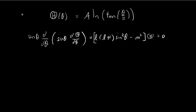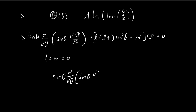In this question, we want to verify that this solution does indeed satisfy this differential equation for the case when both L and M are equal to 0. When L and M are equal to 0, this differential equation becomes sin θ times d/dθ of sin θ multiplied by the derivative of capital Theta, in terms of dθ, and this is equal to 0. We want to check that this left-hand side expression is indeed equal to 0 for this specific function.